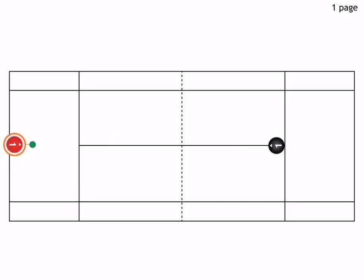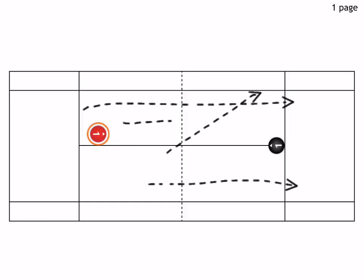So one approach shot with a random feed - the player doesn't know where it's going to go. He hits it down the line, gets two volleys, and then two overheads.